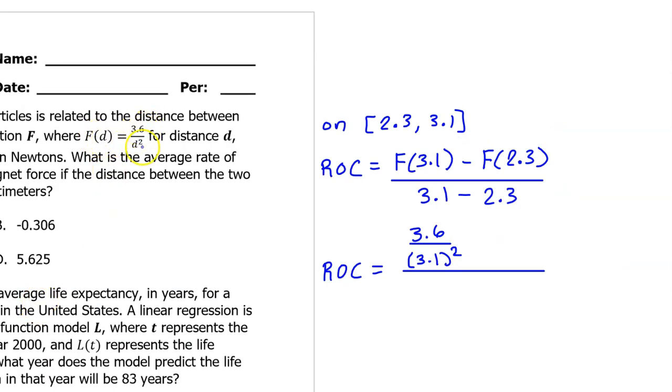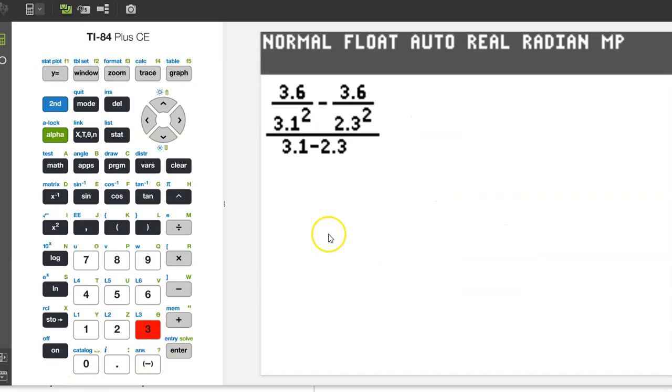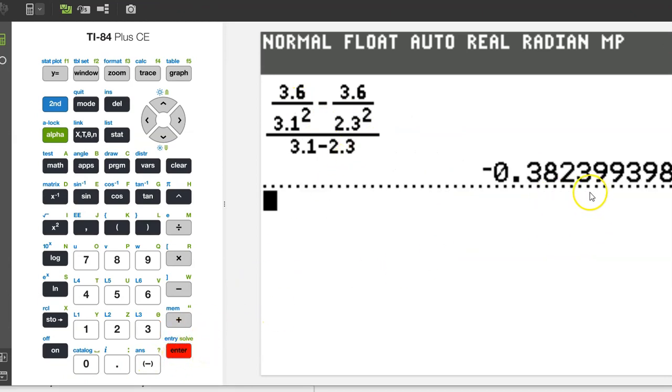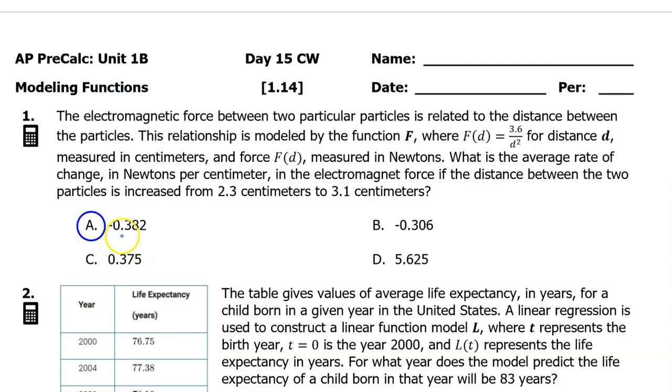f at d is 3.6 over d squared. So, f at 3.1 will be 3.6 over 3.1 squared. Similarly, f at 2.3 is 3.6 over 2.3 squared. And then in the denominator, we still have 3.1 minus 2.3. This problem is calculator active, so we can just type this entire expression into the calculator. Just type it in like this and hit enter. Kabam! We need 3 decimal place accuracy. So, negative 0.382. The answer is A.